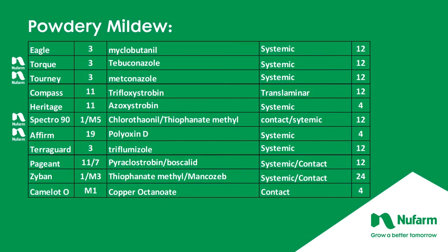Materials recommended for powdery mildew include Eagle, Torque, and Tourney — all systemic FRAC Group 3 materials — plus Compass and Heritage, which are FRAC Group 11 systemics. When using systemic materials there is higher potential for resistance building due to fewer active sites. Also included are Spectro 90, Affirm, Terra Guard, Pageant, Zyban, and Camelot-O. Some systemics include a contact component to help prevent resistance; combination products are particularly good for powdery mildew.